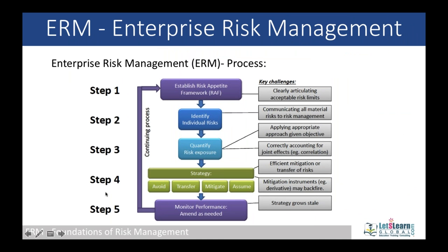In the risk management process we follow five steps. The steps begin with the risk appetite framework, which defines to what extent we can afford and accept a risk. Some companies are risk averse, meaning they do not accept or tolerate any kind of risk and want risk-free activities. But it is not possible to have completely risk-free activities, so we must determine acceptable limits.